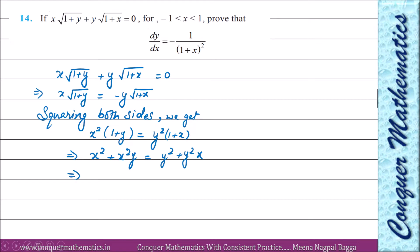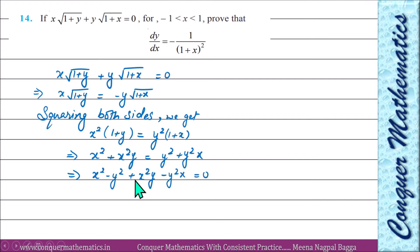Ab hume dikh raha hai kuch terms mein symmetry. Yahan teen factors hain, yahan teen factors hain, yahan do factors hain. Hum sab terms ek taraf le aate hain: x² minus y² — inke saath adjust karna chahte hain — aur x²y minus y²x right se liye.